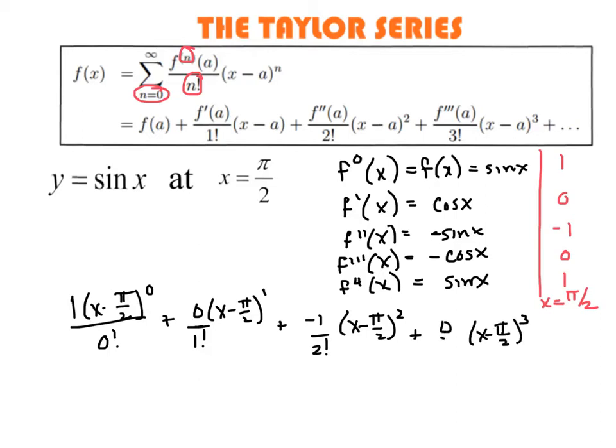I'm going to keep going here. To the third power, 3 factorial. And the last one I found, to the fourth power, this will be 4 factorial. Let's do some simplifying of this.